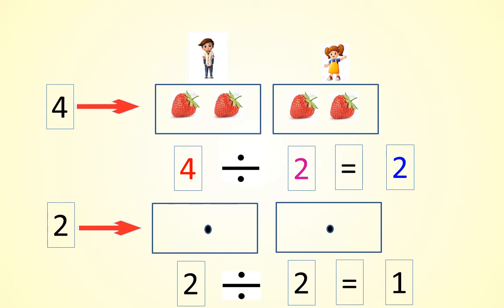Here four strawberries we divide into two equal groups — how many we got? Two. Then next one: two chocolates we divide into two groups — how many they got each? One.